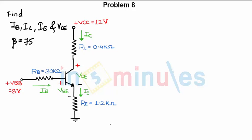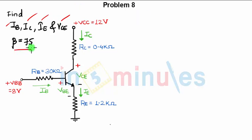Hi, welcome. This is a very simple problem. There is a given circuit in the question and we need to find IB, IC, IE, and VCE. The value of beta is 75.